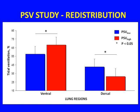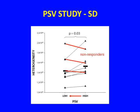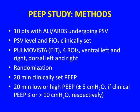The ventral lung region received more ventilation at higher pressure support and less at lower pressure support, while dorsal ventilation increased. Our global heterogeneity index significantly decreased when passing to lower pressure support. Interestingly, with this technology we may be able to recognize patients who are not responding to our intervention — non-responders.